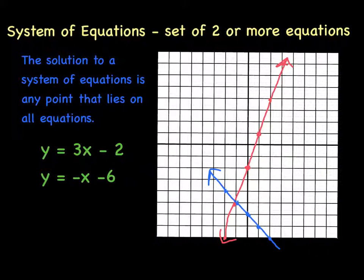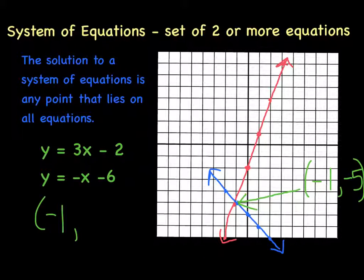Again, the solution is any point that lies on all equations. Well, in this particular situation, these equations intersect right here at the point (-1, -5). So the point (-1, -5) is the solution, because that is the point that lies on both equations. Therefore, it's the solution to the system.